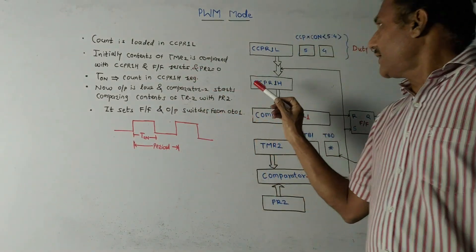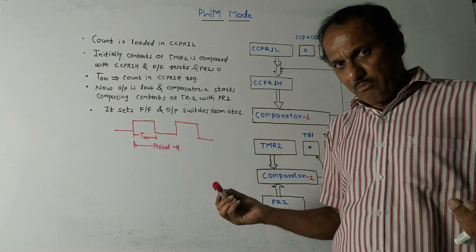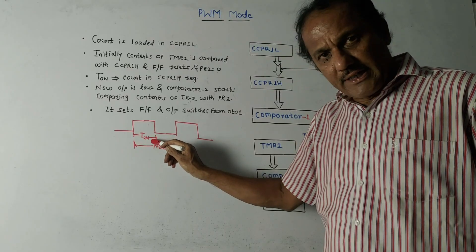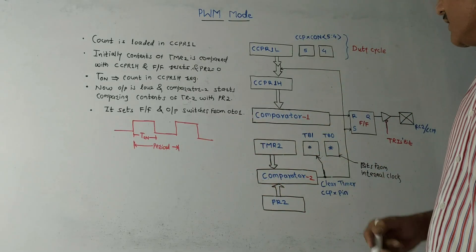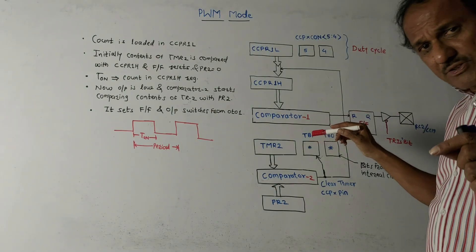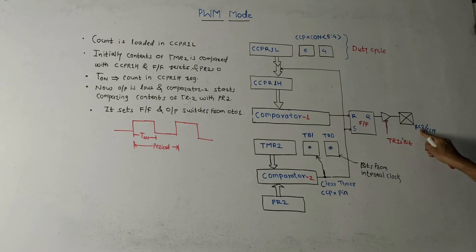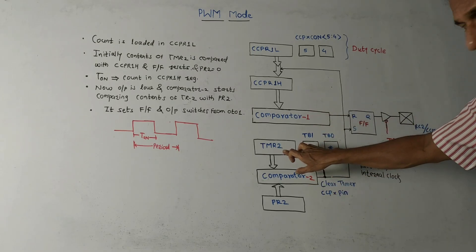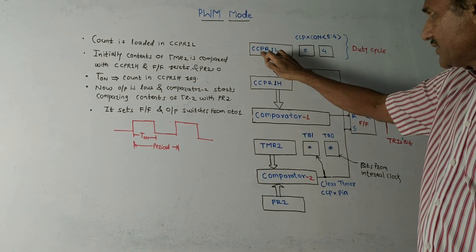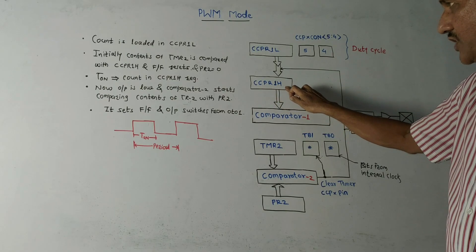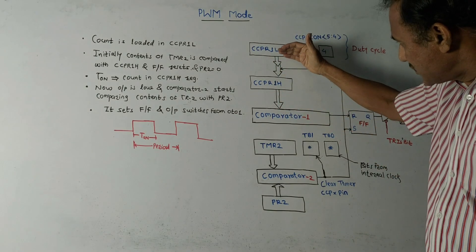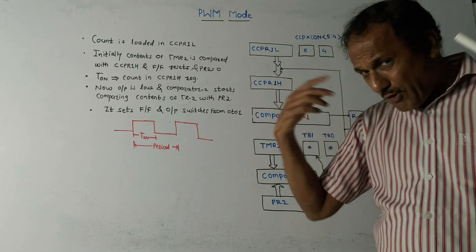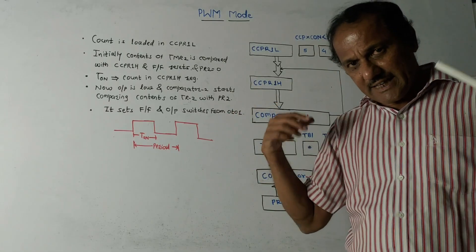Now let us discuss the block diagram of PWM mode. T_on is related to duty cycle, while the on-period and off-period together correspond to the period of the waveform. A PWM signal is generated at RC2 — pin number 2 of Port C, the CCP pin. We use two comparators and Timer2. There are two registers: CCPR1L and CCPR1H. The count is initially loaded in CCPR1L, then the microcontroller transfers it to CCPR1H. Initially, Timer2 is reset to all zeros.